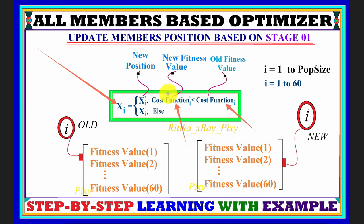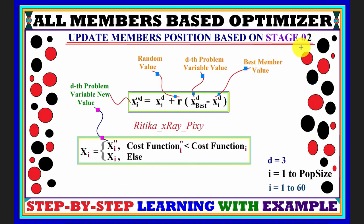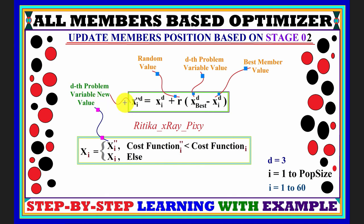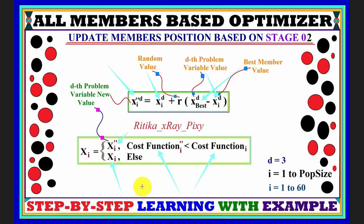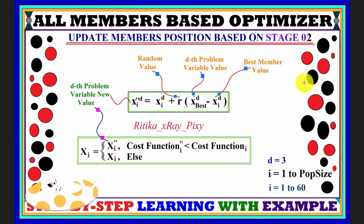In Stage 2, we update the member positions using the best member in the current population. We calculate a new position for each agent using the best member's value and the older value for the i-th member. We then compare the fitness value of the new position with the older position — if the new position fitness value is better, we consider the new position; otherwise we keep the older position.